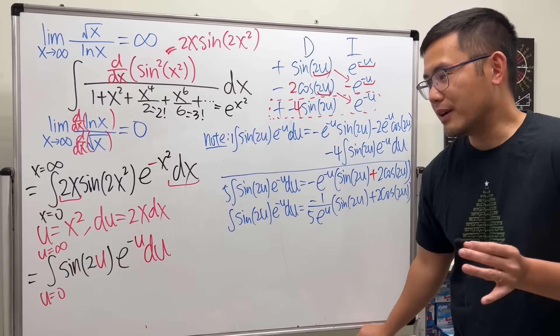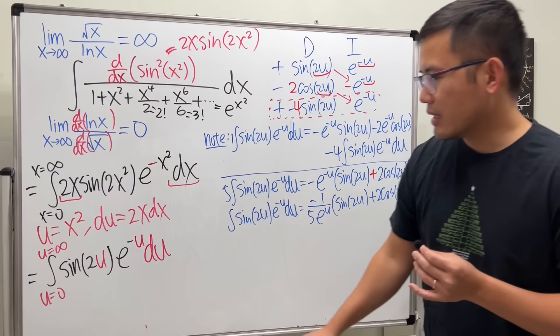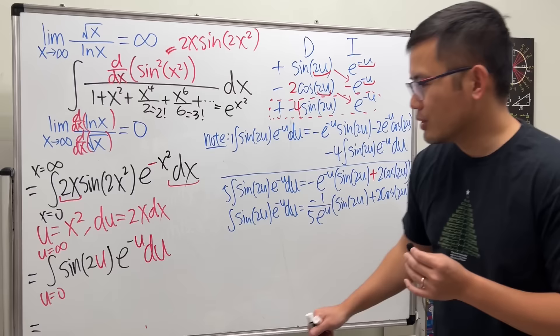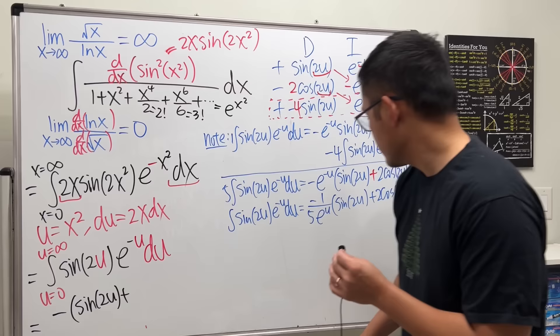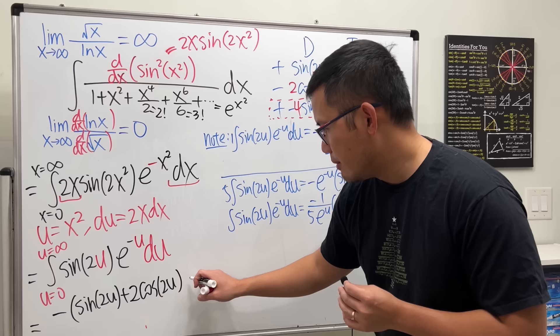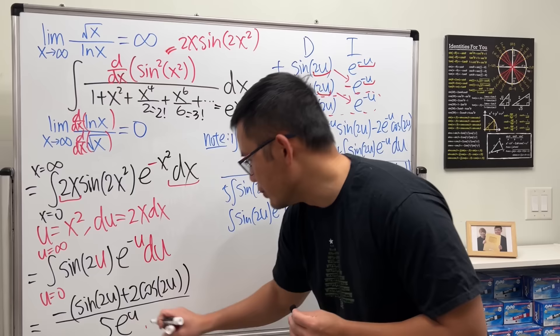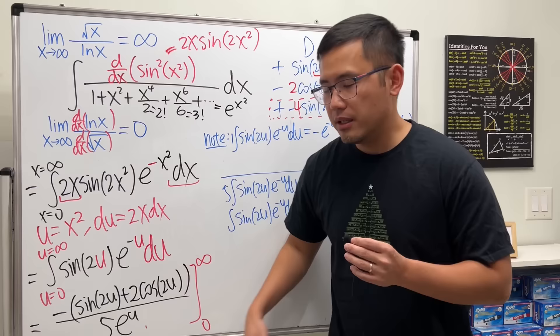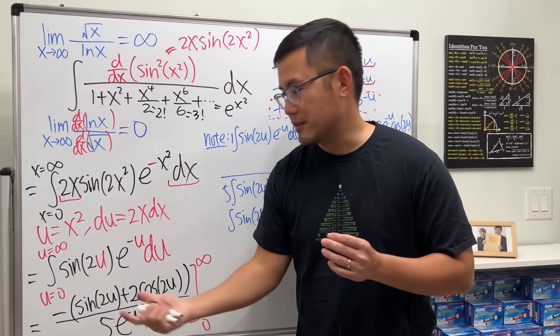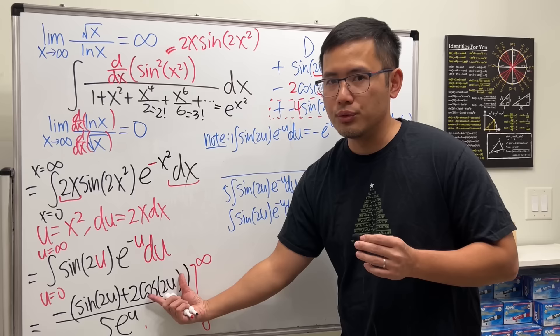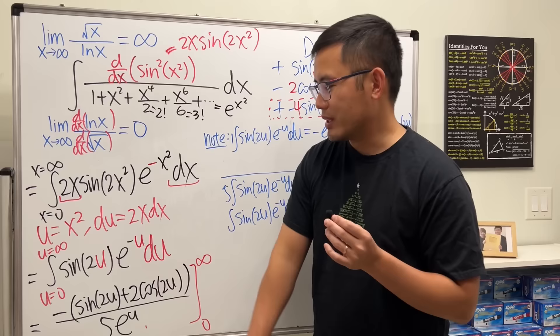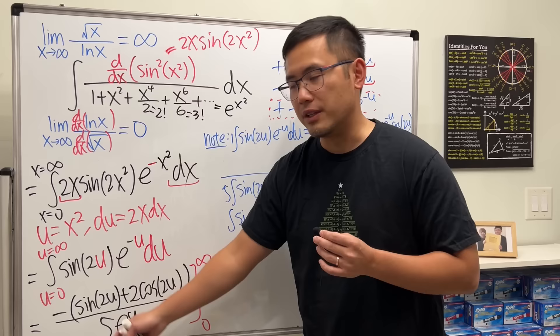Now we just apply the limits. Writing it neatly: the expression is −(sin(2u) + 2cos(2u)) / (5e^u). When we plug in infinity, the sine and cosine terms are bounded — between −1 and 1 — so the numerator is finite. But e^∞ in the denominator is infinity, so the whole thing goes to zero.